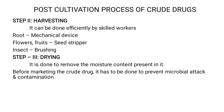The next step is harvesting. Harvesting is done efficiently when using skilled laborers, as they know how to properly collect the crude drug and avoid adulteration. For collecting roots, certain mechanical devices should be used. For flowers or fruits, a seed stripper is used to collect them properly. If collecting insects, the method called brushing is used, where a brush-type apparatus collects the insects.